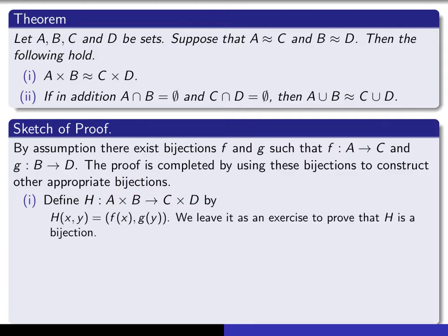Well, the most natural way to go is to take the X component and use F of X on it. Take the Y component and use G of Y on it. And then just create an ordered pair out of it so as to give yourself an element of C cross D. It's then not a very difficult exercise to prove that this function is in fact a bijection. And I'm going to leave that for you to do as an exercise.